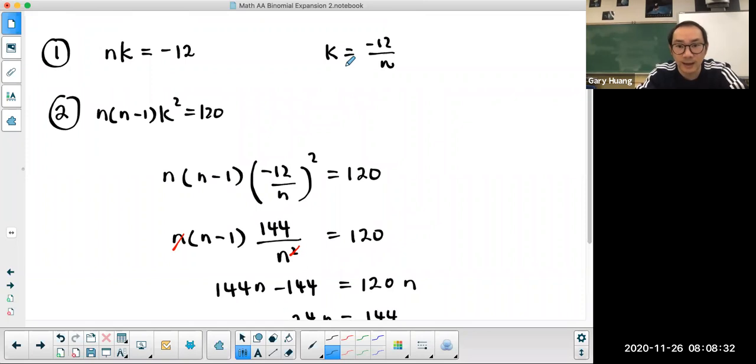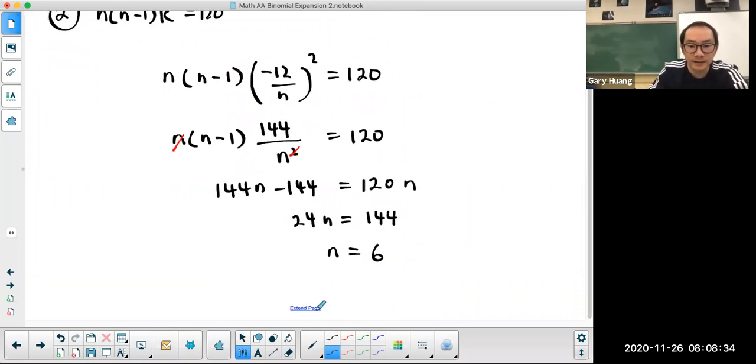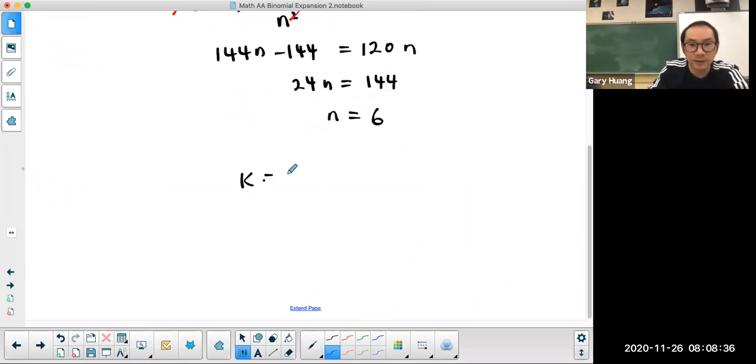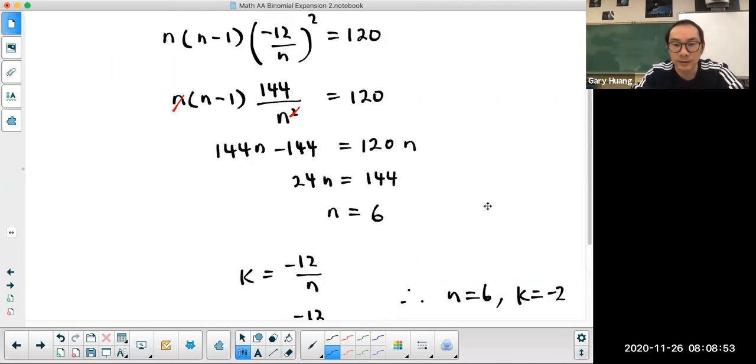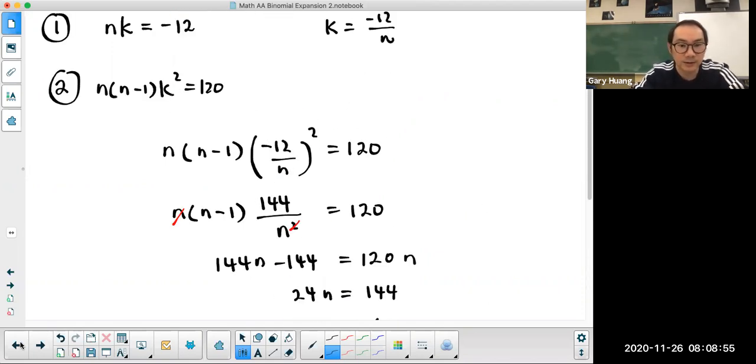What about the value of k? k is equal to negative 12 divided by n. So if n is equal to 6, k is going to equal to negative 2. So therefore, n equals 6 and k equals negative 2 in this particular expansion.